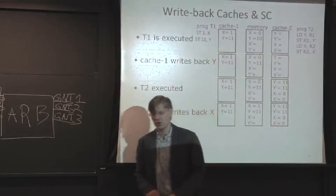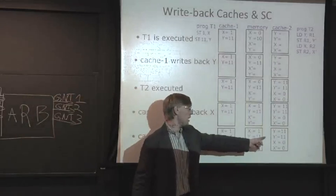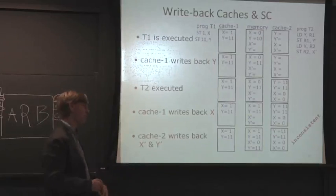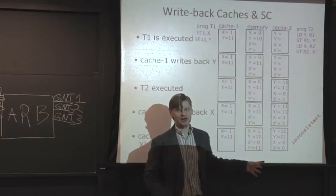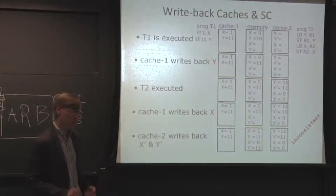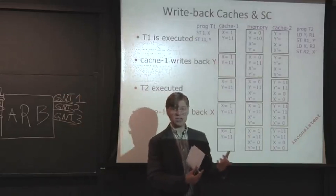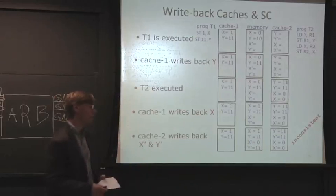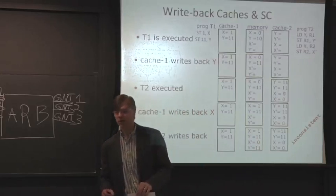Then we run thread T2 to completion. It reads the values from main memory, brings it into its cache, does the updates here, but it doesn't actually do a write-back yet. Then cache 1 writes back x. So now main memory says 1 and 11. That's not good, but at least that's what program T1 would do if you normally execute. But what's not good is cache 2 is not consistent with main memory. Finally, cache 2 does a write-back of x prime and y prime. This was a sequentially inconsistent memory output. This is never supposed to happen in a sequentially consistent system.